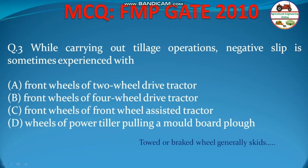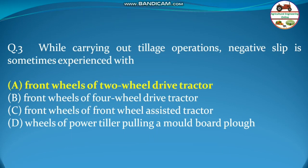In a four-wheel drive tractor, both front and rear wheels are powered, so that option is eliminated. Front wheels of a front wheel assist tractor are also powered, so that's not it either. Power tiller wheels are powered, and negative slip may occur with a rotary cultivator, but here a moldboard plow is given. Therefore the answer is option (a): front wheels of the two-wheel drive tractor.